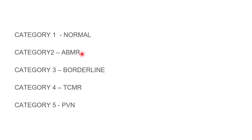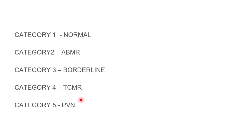Category one is normal or non-specific biopsy finding. Category two is antibody mediated rejection. Category three is borderline. Category four is T-cell mediated rejection. Category five is polyomavirus nephropathy.